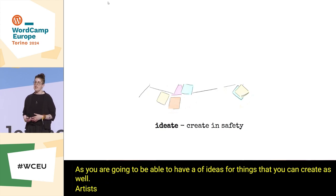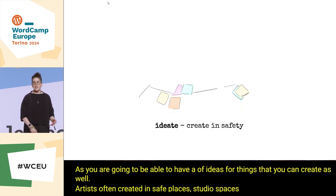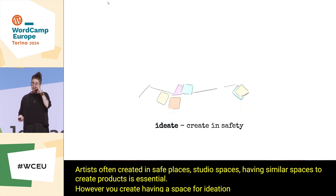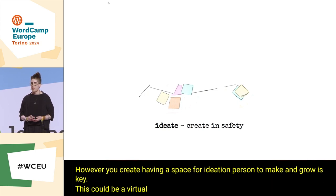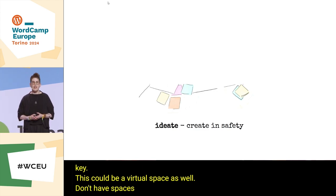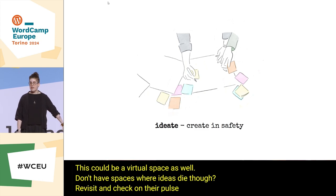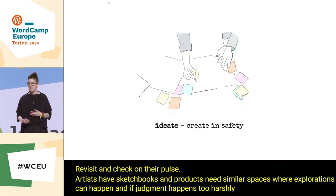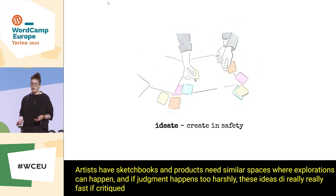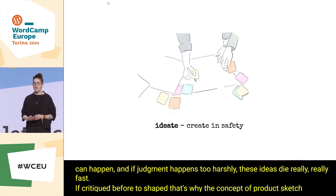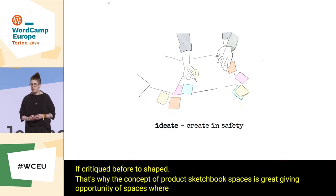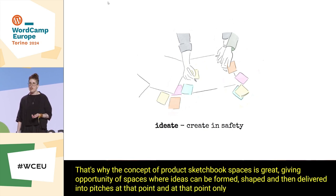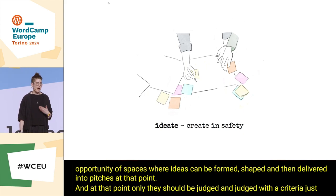Art is often created in safe places — studio spaces. Having similar spaces to create products is essential. Having a space for ideation to make and grow is key, and this could be a virtual space as well. Don't have spaces where ideas die. Artists have sketchbooks, and products need similar spaces where explorations can happen. If judgment happens too harshly, these ideas die really fast if critiqued before they're shaped. That's why the concept of product sketchbook spaces is great — giving opportunity for ideas to be formed, shaped, and then delivered. At that point, and only at that point, they should be judged, and judged with criteria.